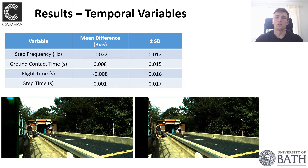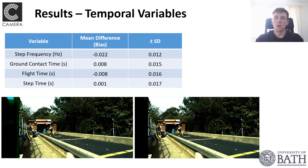For temporal variables, we saw good agreement with ground contact and flight times falling within approximately one and a half frames of the ground truth data. We generally saw a systematic overestimation of ground contact time and a systematic underestimation of flight time. This was due to the fact that we had raised the ground plane by two and a half centimeters to reduce occlusions caused by the sled, resulting in a systematic early detection of ground contact and a systematic late detection of toe-off events.